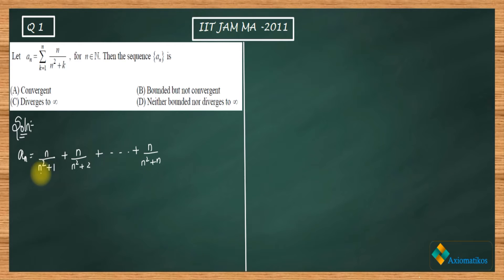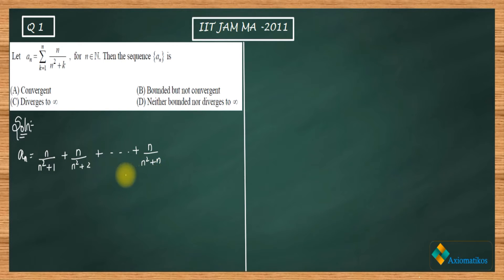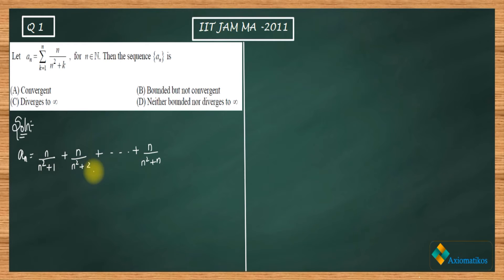First, just observe that the denominator on the first term is less than the denominator on the second term, which is less than the third term — the denominator keeps on increasing in the right direction. Since the denominator keeps increasing, the whole quantity keeps decreasing to the right, meaning each term is bigger than the next. This observation is the main catch of the question.